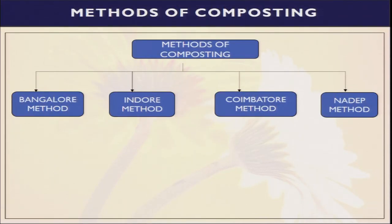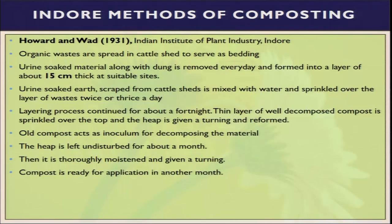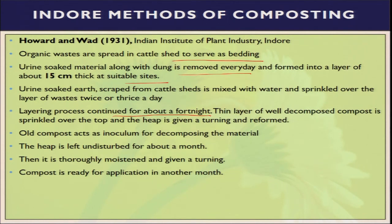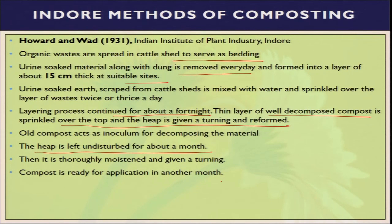Different types of composting methods have evolved over the years. There is the Bangalore method, the Indore method, the Coimbatore method, and the NADEP method. In the Indore method, developed by Howard and Ward at the Indian Institute of Plant Industry, organic waste is sprayed in the cattle shed as bedding. Urine-soaked material along with dung is removed every day and forms a thin layer. After that, the layering process continues for about a fortnight — 15 days. Then turning and repacking is done, and the heap is left undisturbed for about a month, so by two to three more months the compost is ready for use.